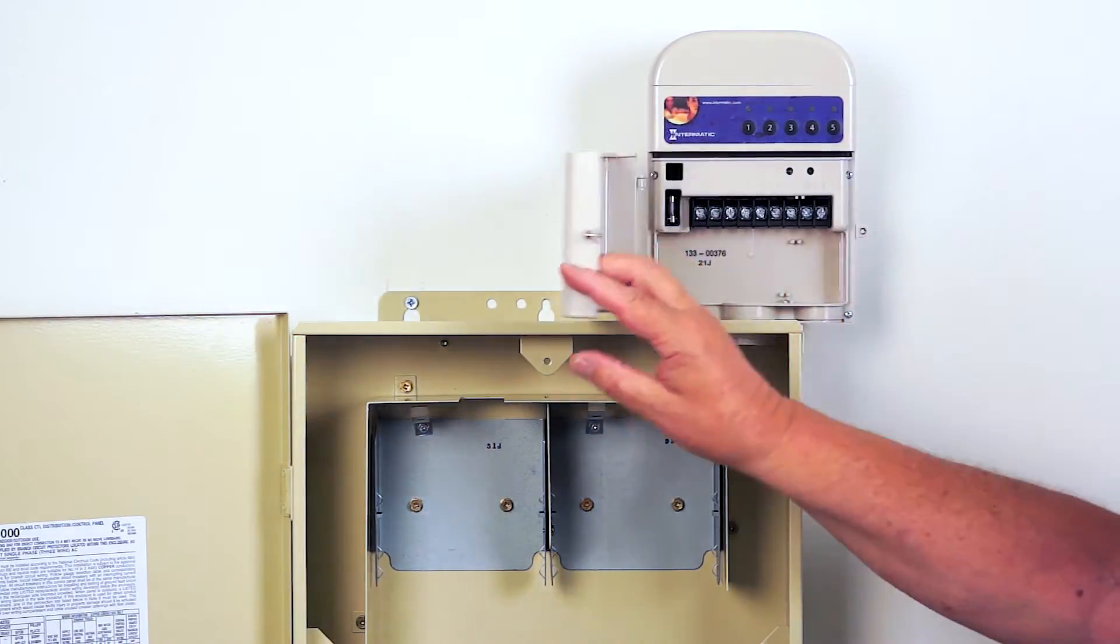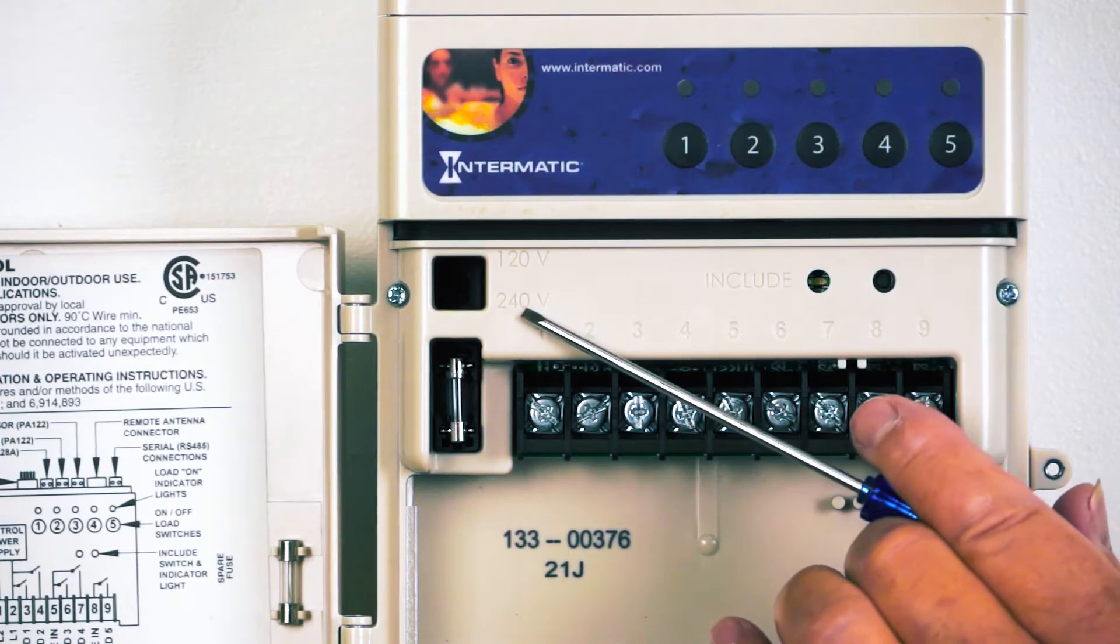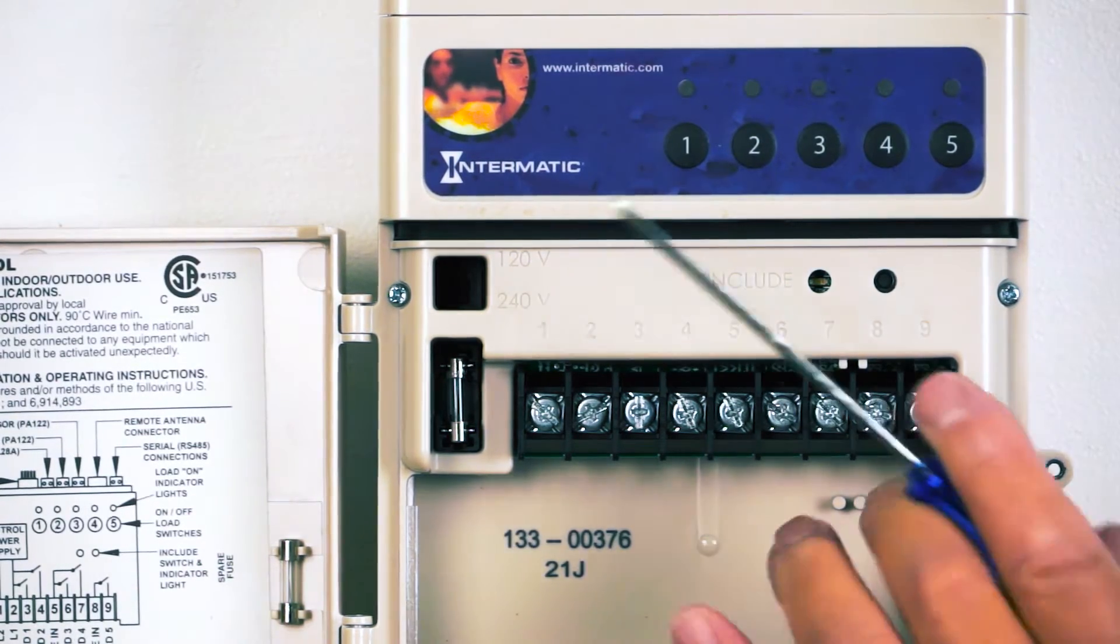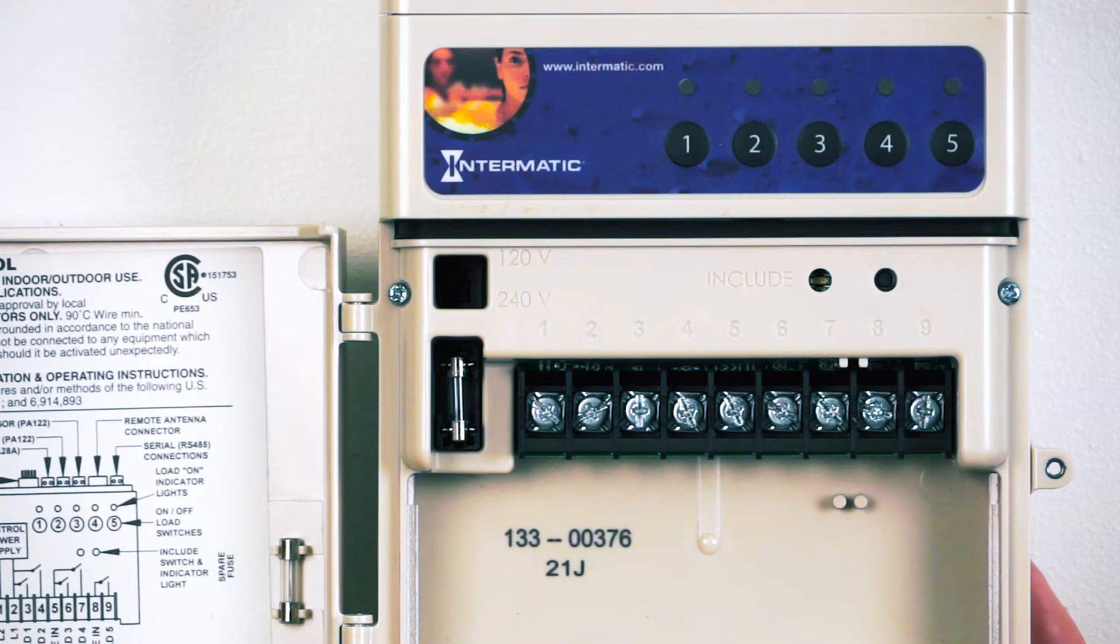Open the door on the receiver and make sure the selector switch is in the correct position. The receiver is factory set for 240 volt operation. Refer to the installation manual for 120 volt.